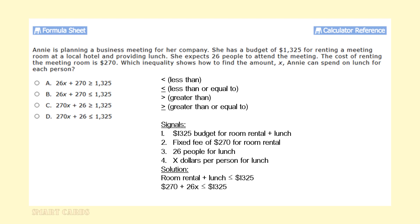The solution for this problem would be the room rental plus the lunch should be no more than $1,325. Less than or equal to $1,325. When we put the information together, we're going to get the following. The $270 fixed fee that she has for the room rental plus the 26 times x, 26 people times x amount of dollars for lunch should be less than or equal to $1,325, which is her budget for the meeting as well as for lunch. That would give us answer option B.